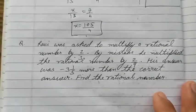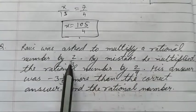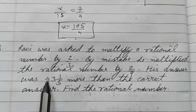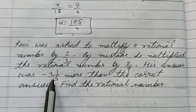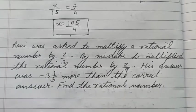Now come to the next question. Ravi was asked to multiply a rational number by 2/3. By mistake he multiplied the rational number by 2/9. His answer was minus 3⅕ more than the correct answer. Find the rational number.